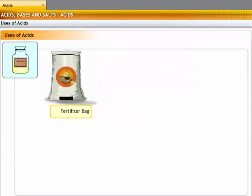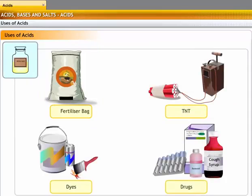Nitric acid is used in the manufacture of fertilizers, explosives like TNT, dyes, and drugs.